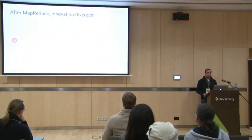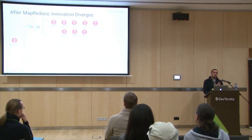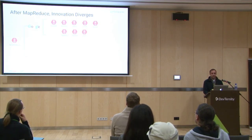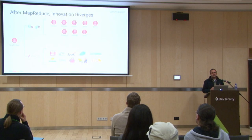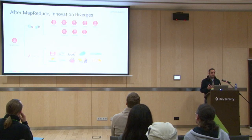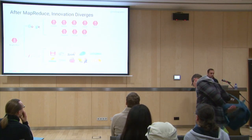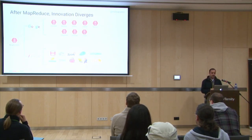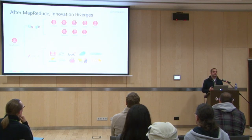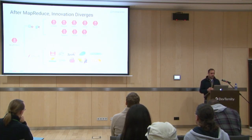When MapReduce came along as a paper, it kickstarted a bunch of other papers within Google, such as BigTable, MillWheel, Flume, and Spanner. But these were papers or internal implementations — things people couldn't take and use themselves. That's why we also had Apache projects. For MapReduce, there is Hadoop, the open source implementation, along with Spark, Pig, and Hive. A whole new ecosystem of open source technologies started after MapReduce.